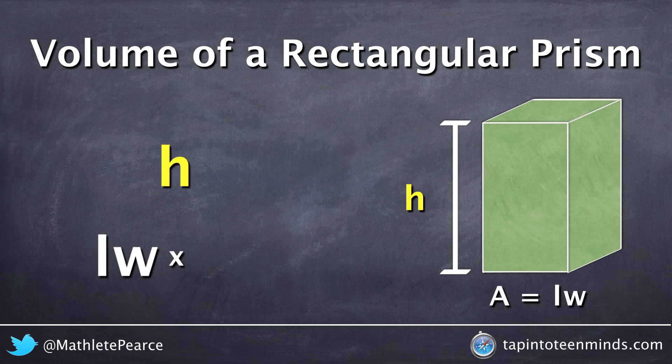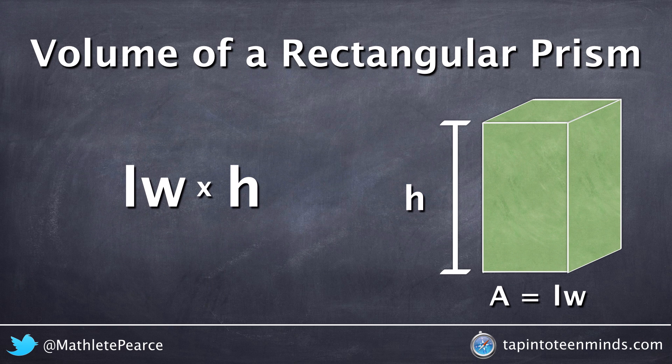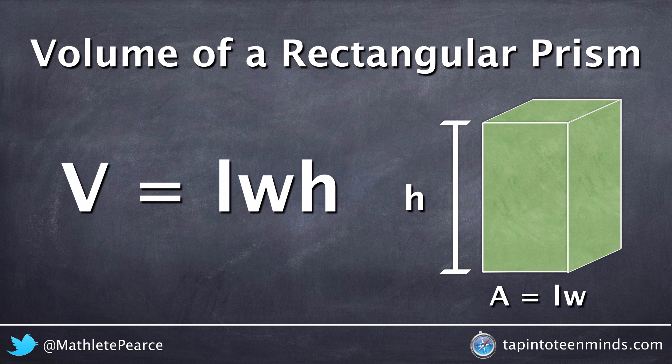And thus, the volume of a rectangular prism can be found by multiplying the area of its base times its height, or in other words, taking the length times the width of the base times the height.